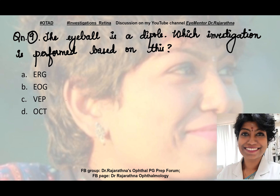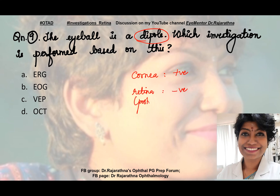Question number 9: the eyeball is a dipole — which investigation is performed based on this? When I say the eyeball is a dipole, that means there is a plus area and a minus area. Based on that, we are going to measure the potential of the eye. The cornea is considered positive — the anterior end is positive — and the back end, that is the posterior pole or retina, is considered negative. So we are going to measure the resting membrane potential of the macula.